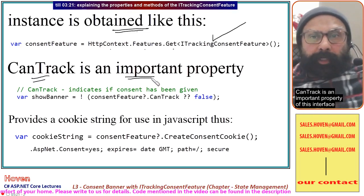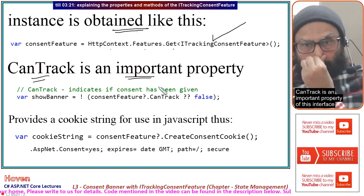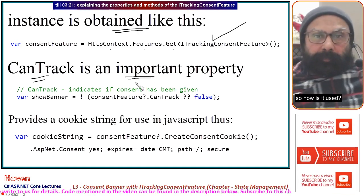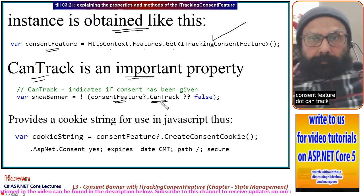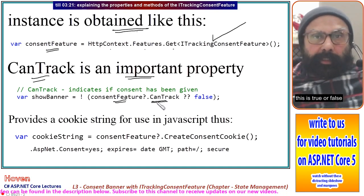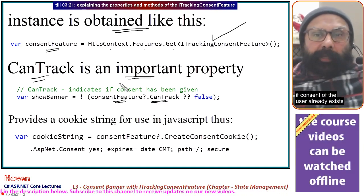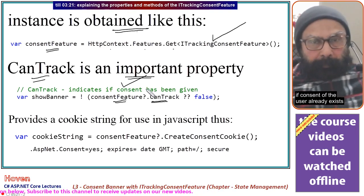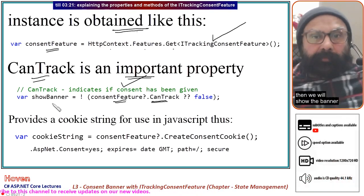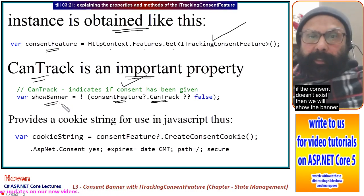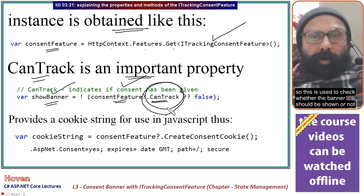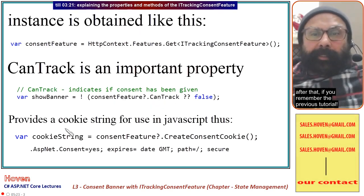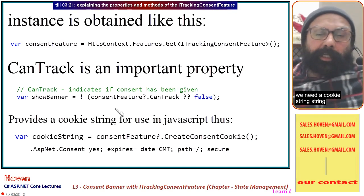CanTrack is an important property of this interface. Using the consent feature instance, you call consentFeature.CanTrack — this is a true or false property that tells us if consent from the user already exists. If consent exists we will not show the banner; if it doesn't exist then we will show the banner. So this property is used to check whether the banner should be shown or not.